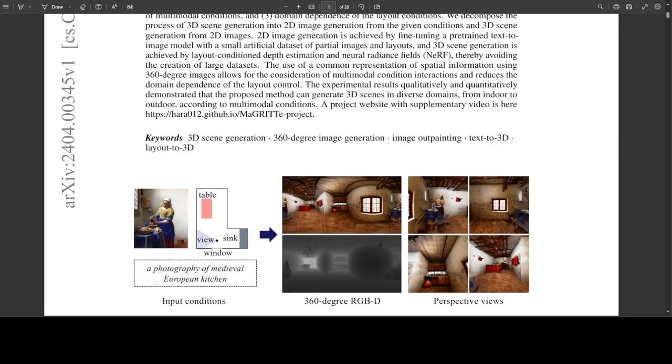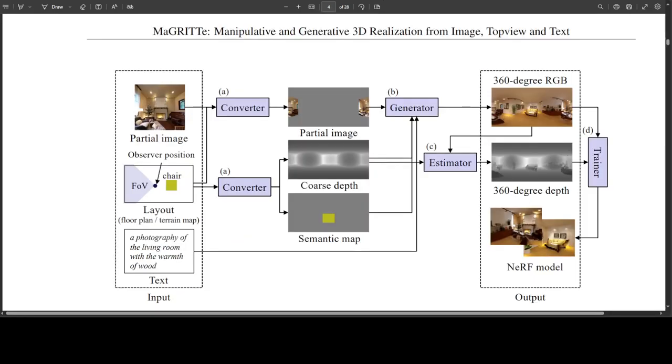This method is to control and generate 3D scenes from partial images, layouts, and texts, also complementing the advantages of each condition. This method avoids the need for creating large datasets by fine-tuning a pre-trained large-scale text-to-image model with a small artificial dataset of partial images